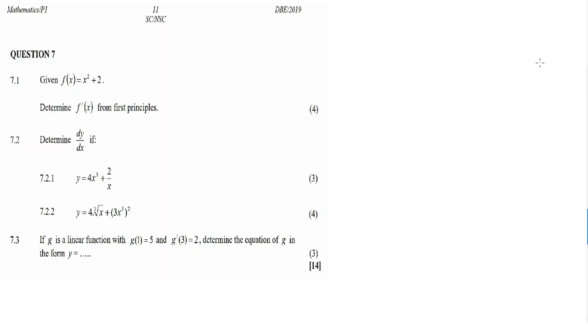Right, now 7.1, they give a function x squared plus 2, determine f prime of x from first principles. So 7.1, first principle is f prime of x equal to lim, the limit of h approaches 0 is f(x+h) minus f(x) all divided by h.